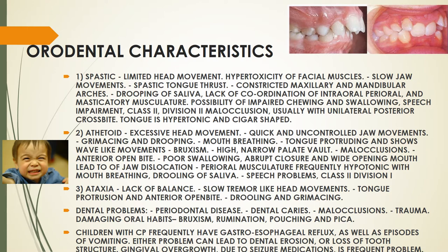In spastic there are speech impairments and the malocclusion seen is Class 2 Division 2. Class 2 is when the maxilla is ahead of the mandible, and Division 2 is when the incisors are retroclined, whereas in Division 1 the incisors are proclined. It is usually associated with unilateral posterior crossbite, and the tongue is hypertonic and cigar-shaped.